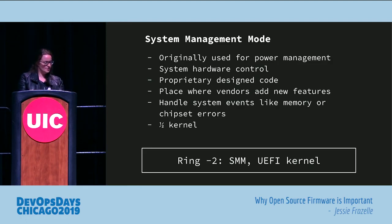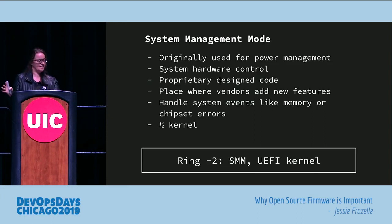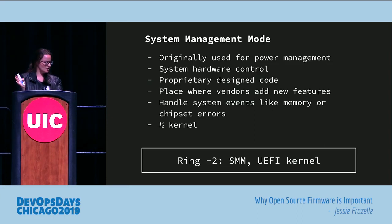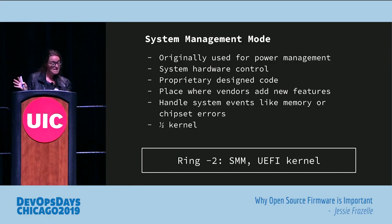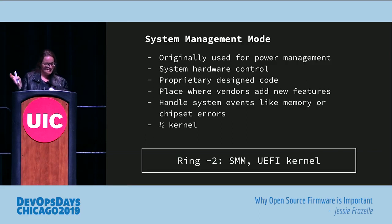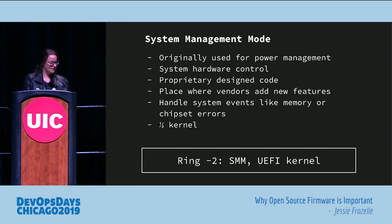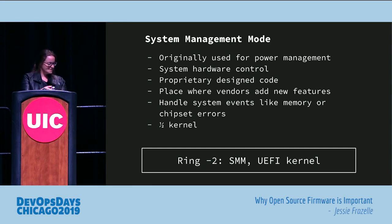System management mode was originally for power management, then people shoved a bunch of other stuff in there — hardware control, proprietary design code. Vendors will add new features there and just throw it into system management mode when it would maybe be better somewhere else. It handles system events like memory or chipset errors, runtime correctable errors, and it's like a half kernel.